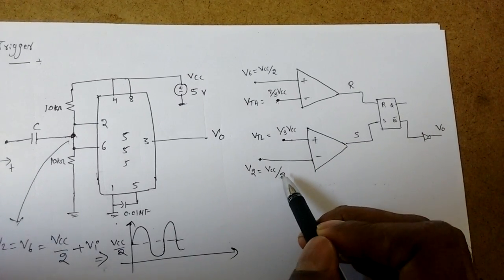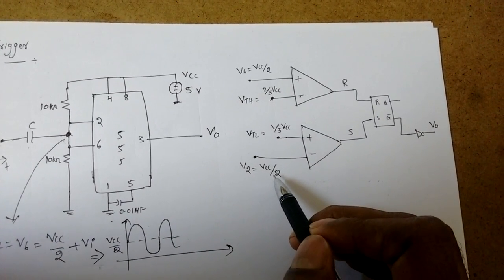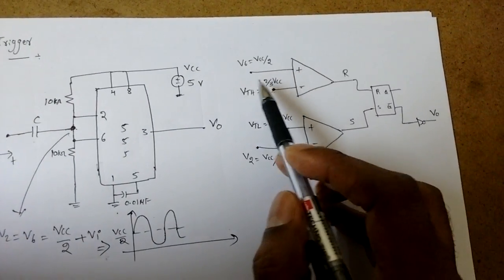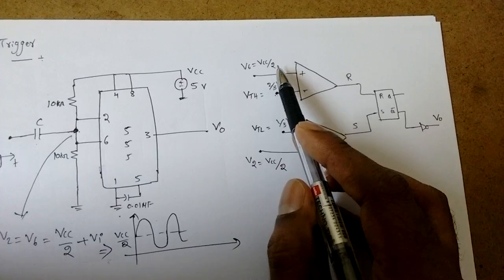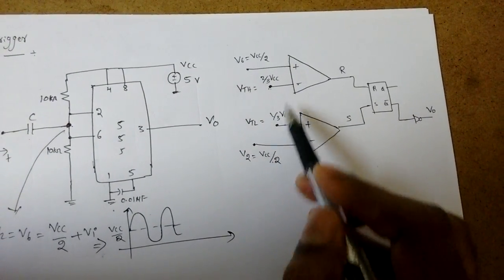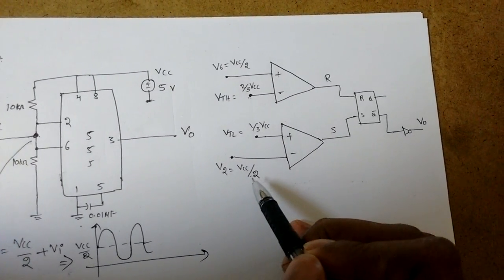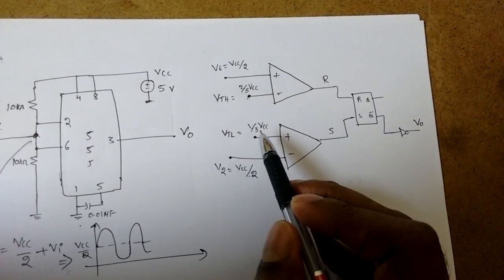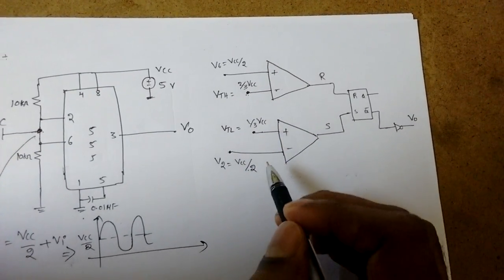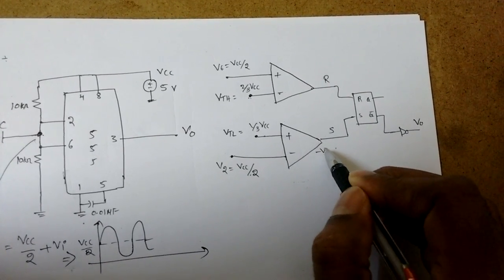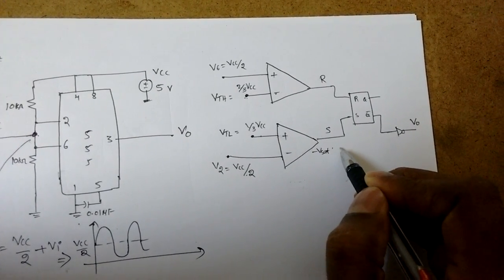The moment V2 is equal to VCC by 2, that is DC voltage we have given from here when we don't apply any input signal. So V6 is equal to VCC by 2, V2 is also VCC by 2. For this case, VCC by 2 means 0.5 times of VCC, which is greater than 1 by 3 VCC that is 0.33 times. So minus is greater than the positive, so you will get minus Vsat or logic level is 0.